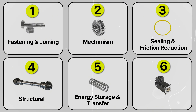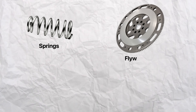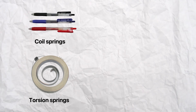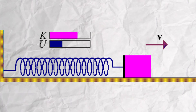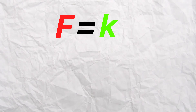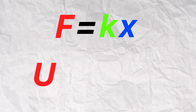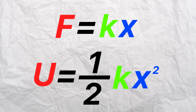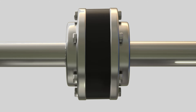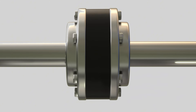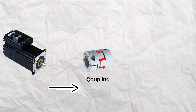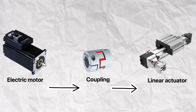The fifth category is energy storage and transfer elements. Springs, flywheels, clutches, and couplings all fit into this category, and store, release, and/or transfer energy as needed. Springs are probably the most common and versatile — you can find them in retractable pins, wind-up cars, garage doors, and your car's suspension system. They store and release energy, absorb shock, and control motion. Hooke's law is used to calculate the spring force, which equals the spring constant times the displacement. The energy stored in the spring is one-half times the spring constant times the displacement squared. Couplings connect two rotating shafts to transmit power while accommodating slight misalignments — for example, connecting the shaft of an electric motor to drive a gearbox connected to a linear actuator.